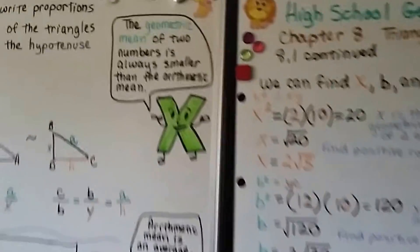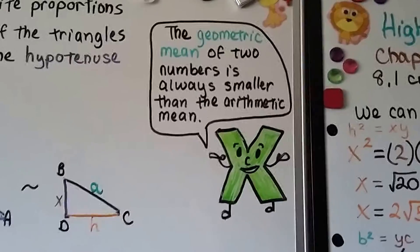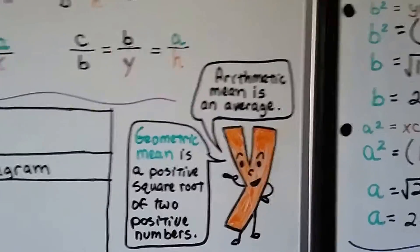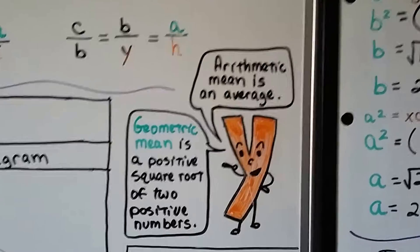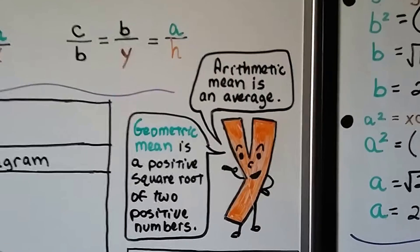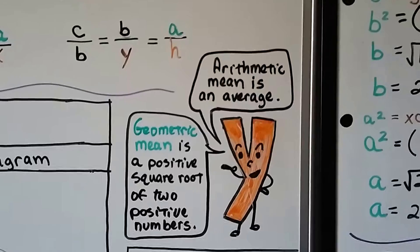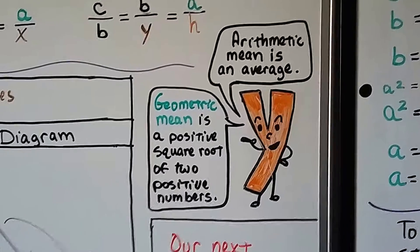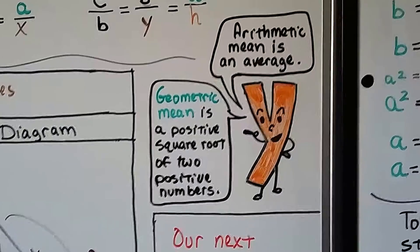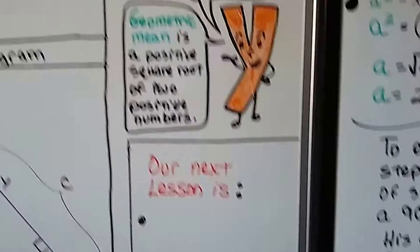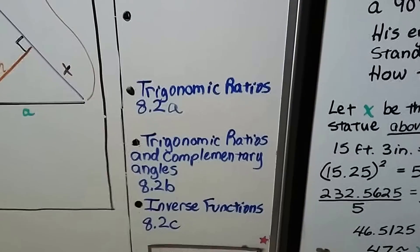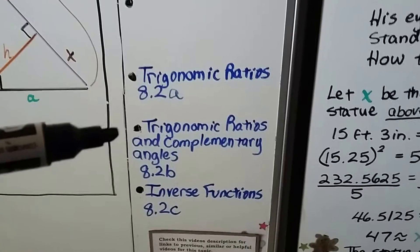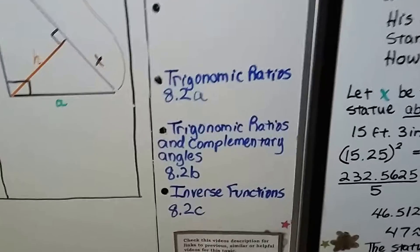The geometric mean of two numbers is always smaller than the arithmetic mean. The arithmetic mean is the average — for example, 2 plus 4 equals 6, divided by 2 gives an arithmetic mean of 3. The geometric mean is the positive square root of the product of two positive numbers, which is very different. Our next lesson covers trigonometric ratios, followed by complementary angles and inverse functions before moving on to 8.3.